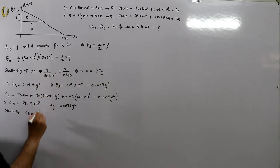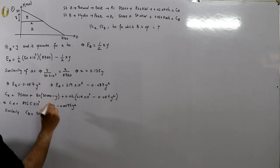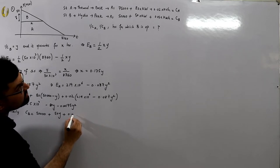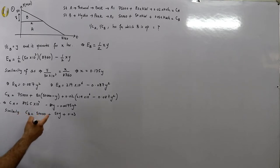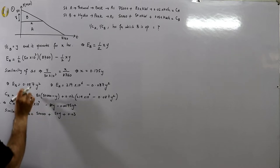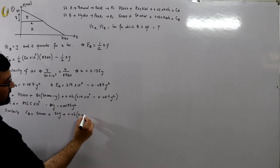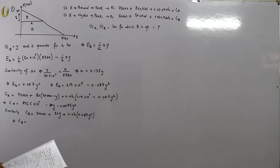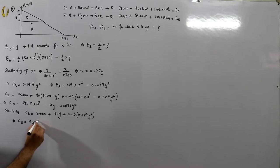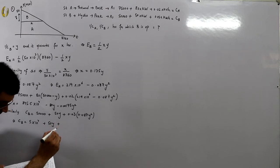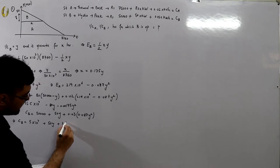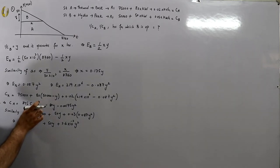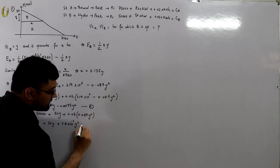Similarly the cost model for B is: C_B = 50,000 + 50Y + 0.03 × 0.087Y². Simplifying: C_B = 5 × 10⁴ + 50Y + 2.6 × 10⁻³ Y².